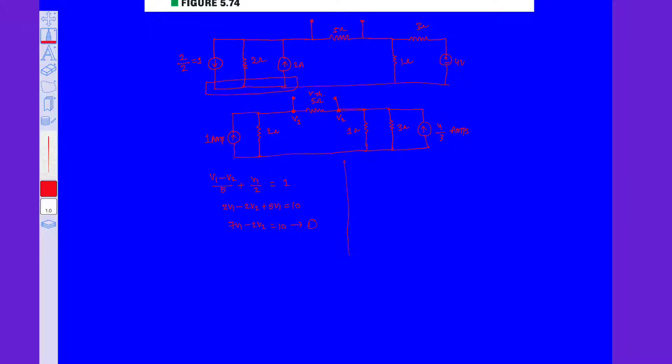Similarly, let us write KCL equation at node V2. V2 minus V1 over 5 plus V2 over 3 equals 4 by 3. Now let us simplify this: 3V2 minus 3V1 plus 5V2 is nothing but 20. Let us simplify this equation also: minus 3V1 plus 23V2 equals 20. Let us say this is equation 2.